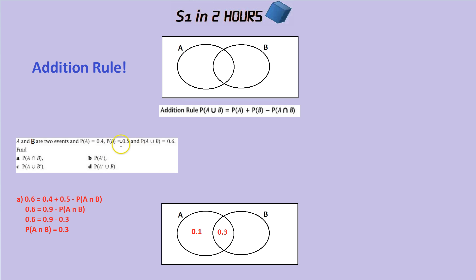And we know B adds up to 0.5, the whole bubble of B, including the middle bit. So what must this section be? It must be 0.2 to add up to 0.5. Okay, now we know the whole Venn diagram has to add up to 1. So we can simply add these up and you get 0.6. So the outside bit must be 0.4.